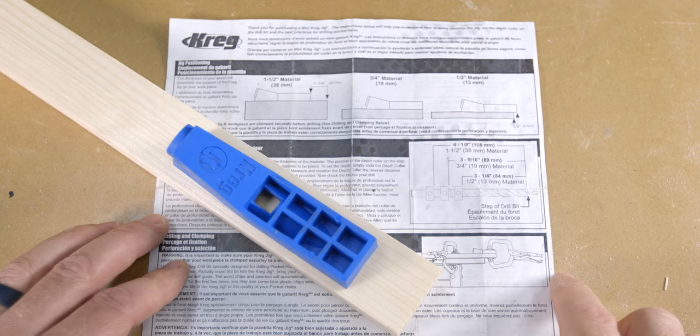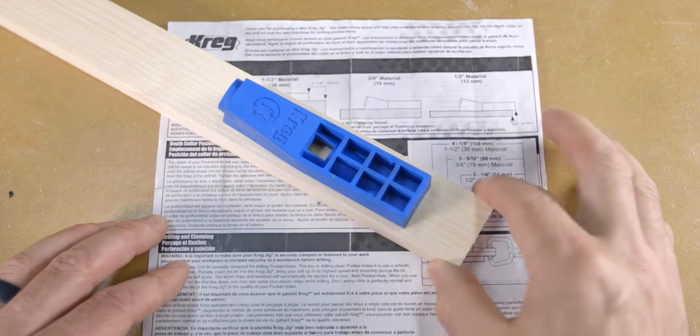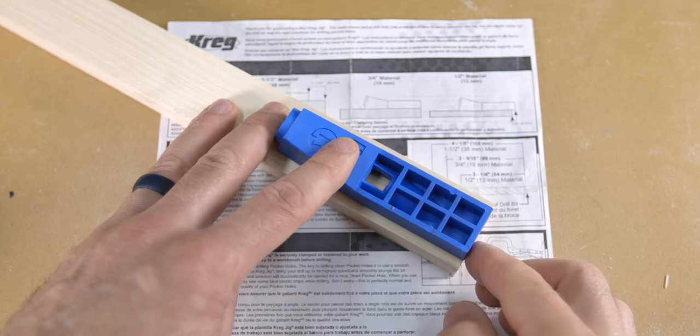The last thing to set up or know is where to locate the jig on the material. Craig recommends setting the jig flush to the end for three quarter inch material. So now that you've got the bit all set up and you know where to place the jig on the material, it's time to drill four holes.